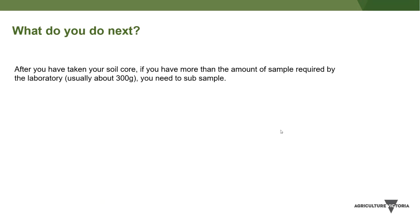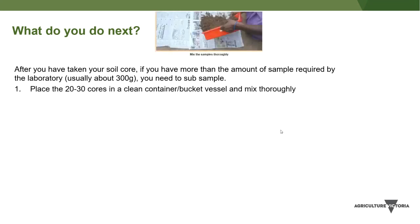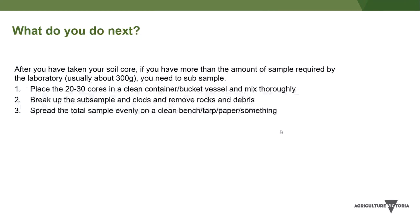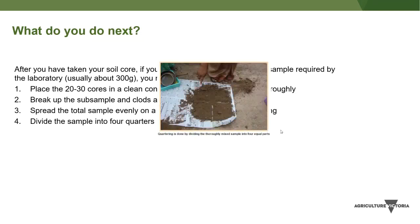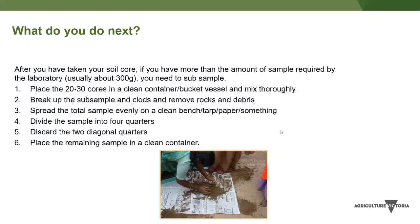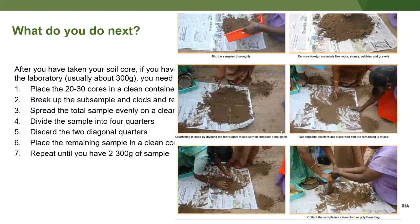Once you've collected your 20–30 cores, you'll have more soil than needed, so you need to sub-sample down to about 200–300 grams. Place all cores together, mix and break them up, remove rocks, debris, clods, and visible plant material, then spread the total sample evenly on a clean surface. Divide it into four quarters, discard two diagonal quarters, and combine the remaining two. If you still have more than 200–300 grams, repeat the process. This quartering method also ensures the sample is thoroughly mixed.